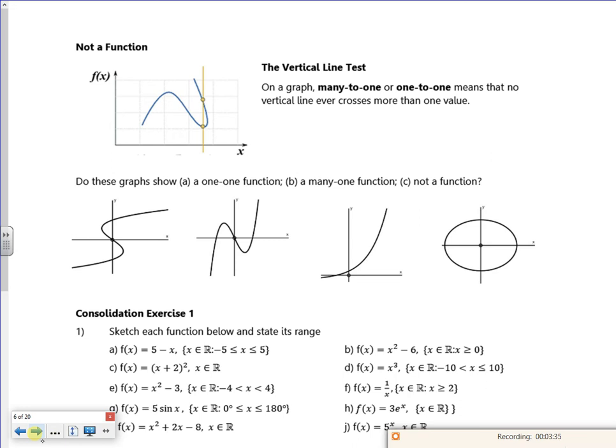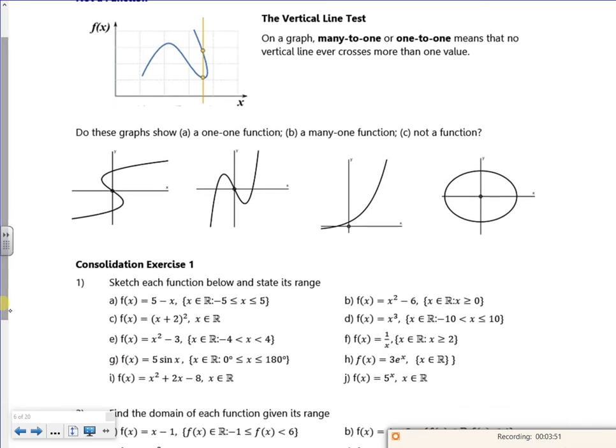So not a function. So it says the vertical line test. So on a graph, many-to-one or one-to-one means that no vertical line ever crosses more than one value. So like a circle is out there, isn't it? So let's try our vertical line thing on this, then we're done.